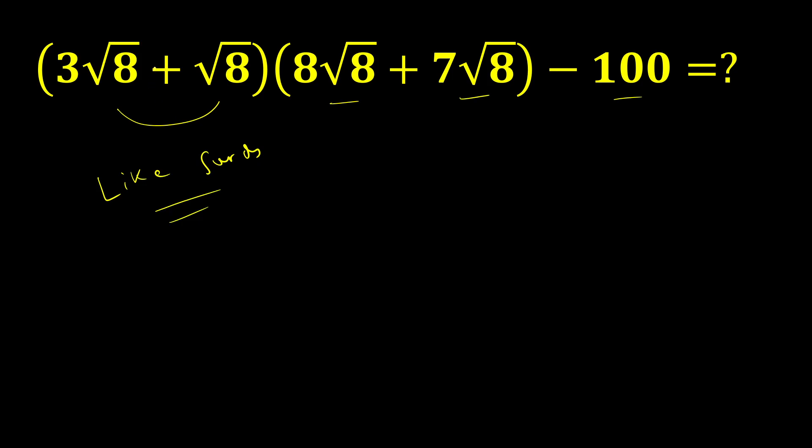Why? Because both of them are of √8 type. Similarly here also these are also of √8 type, so we can add them right. So 4√8 into similarly 8 plus 7, 15√8.